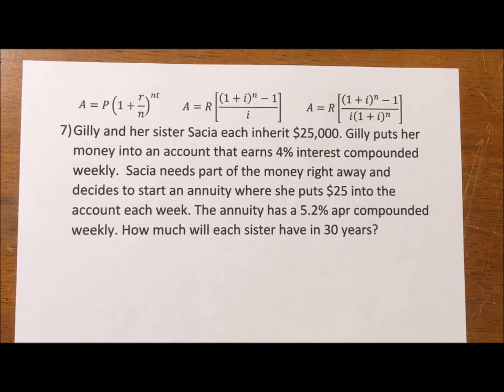This one says Gilly and her sister Saisha each inherited $25,000. Gilly puts her money in an account that earns 4% interest compounded weekly. Saisha needs part of the money right away and decides to start an annuity where she puts $25 into the account each week. The annuity has 5.2% APR compounded weekly, so they're both at a weekly interest rate. How much will each sister have in 30 years?